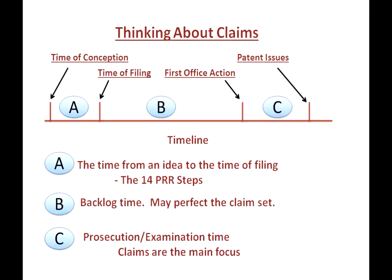Here is a rough timeline showing the time from when you conceive your invention to the day your patent issues. There are three distinct periods. Period A is the time to go through the 14 steps in the patent rights restored process to have your non-provisional patent application ready to file — the length of that period is entirely up to you. Period B is the time from filing until the patent office does its search and issues a first office action, which may be two years or more due to the huge backlog the patent office has.